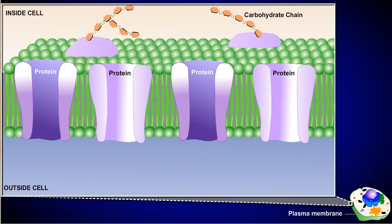Short chains of sugars are attached to the outer surface of some of these proteins, forming glycoproteins, which serve as recognition signals to other cells.